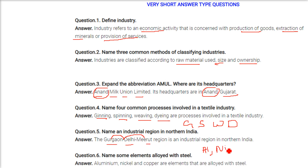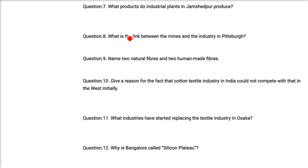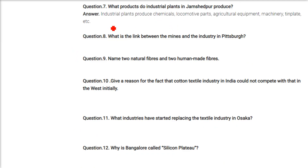Aluminium, nickel, and copper are elements that are alloyed with steel. What products do industrial plants in Jamshedpur produce? Industrial plants produce chemicals, locomotive parts, agricultural equipment, machinery, tin plate, etc.